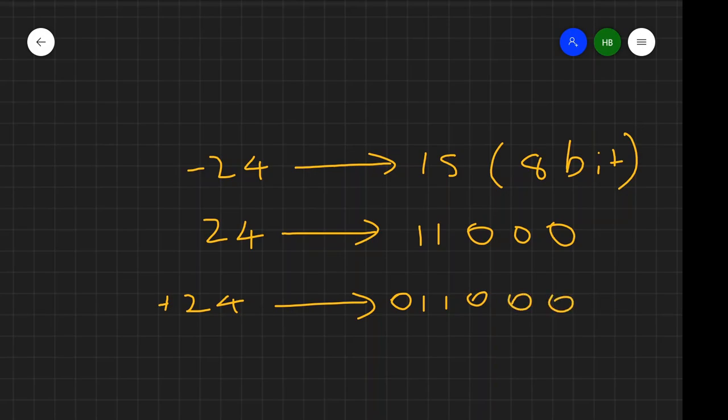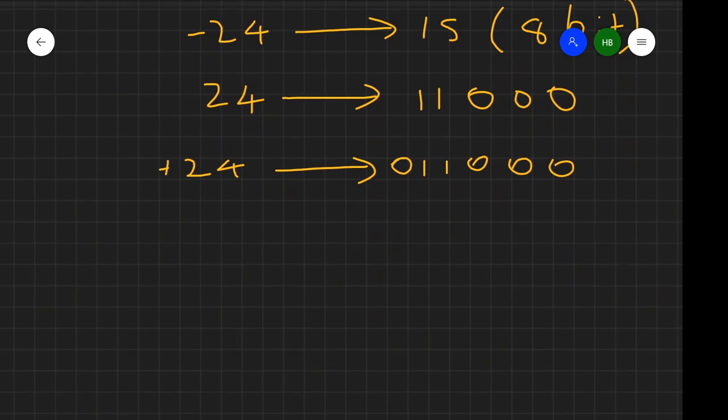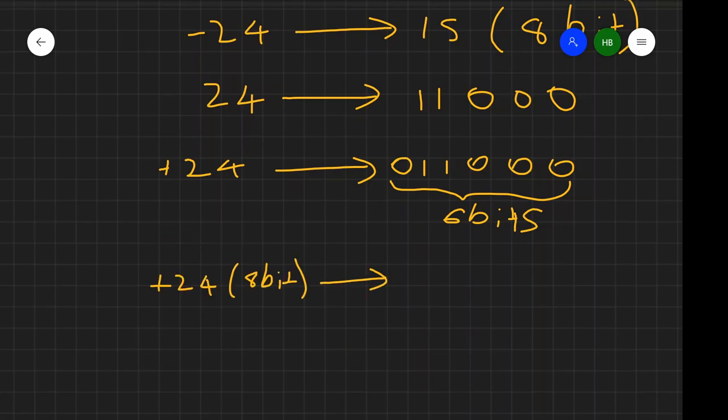Before going to negative 24, we have to extend these bits into 8-bit. There are only 6 bits. We have to extend it to 8 bits. To extend it, we keep adding 0s to the beginning. There are already 6 bits, so we have to add another 2 zeros into the beginning.